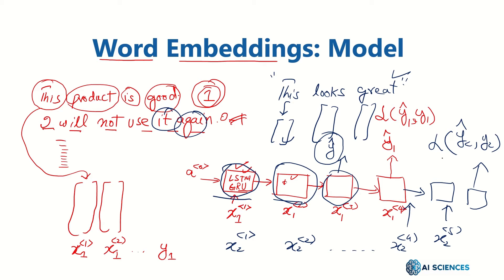That's how text classification works for the binary case. If you have more than two classes, you can apply a softmax unit and generalize to multiple classes.